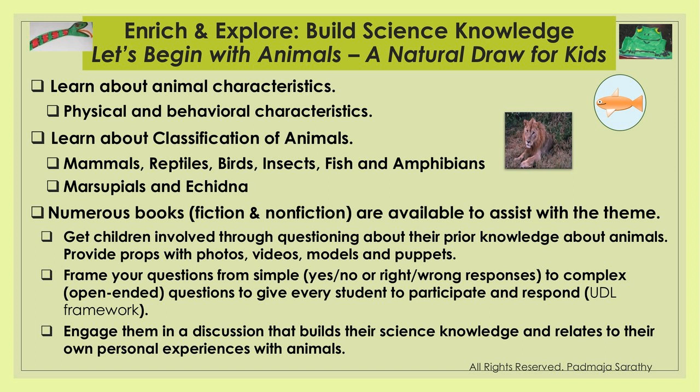I'm going to begin with practical hands-on examples of activities you can pursue. When enriching children to explore and build their science knowledge, let's begin with animals, which is a natural attraction for kids. We want them to learn about animal characteristics — physical characteristics, behavior. Why do some animals pretend to be dead to escape predators? How does the chameleon change color to fit into the environment? And learn about the classification of animals: mammals, reptiles, birds, insects, fish, and amphibians.